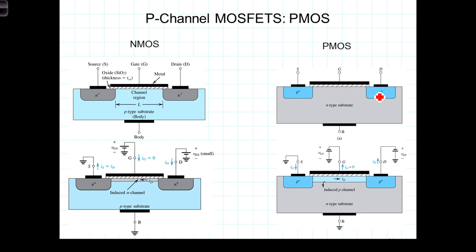Generally speaking, the polarity of the voltages and currents in the P-MOS are opposite to those in the N-MOS. For example, in an N-MOS transistor, a positive voltage VGS is applied to the gate to induce a channel.